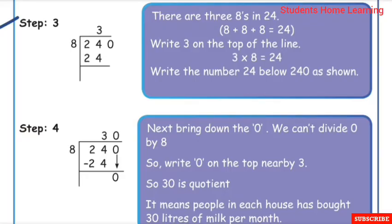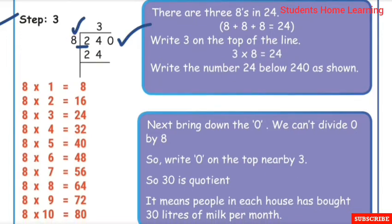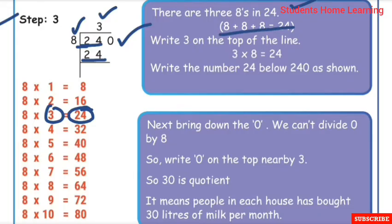Step 3: Now divide 240 by 8. Look at the first digit, 2 — it is smaller than 8, so take the next digit too, making 24. In the 8 times table, 8 × 3 = 24. There are three 8s in 24. Write 3 on top of the line; 3 eights are 24. Write 24 below.